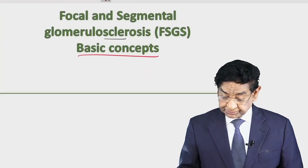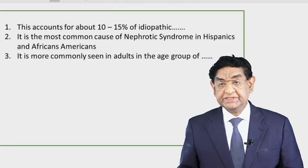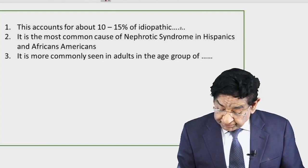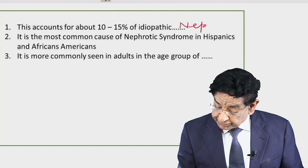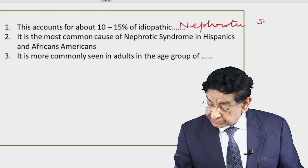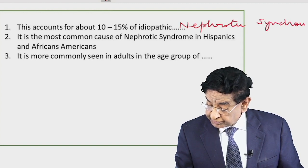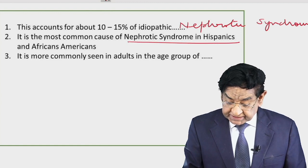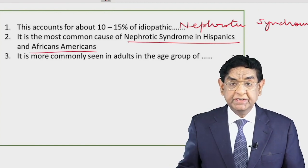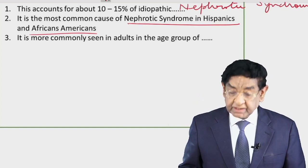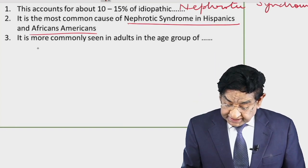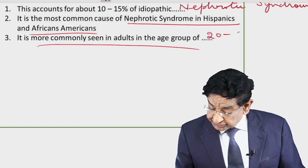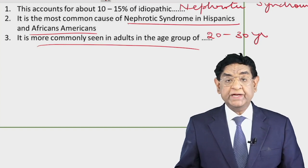FSGS accounts for about 10 to 15 percent of cases of nephrotic syndrome — the idiopathic variety — in adults. It is the commonest cause of nephrotic syndrome in Hispanics and African Americans. It is more commonly seen in adults in the age group of around 20 to 30 years.